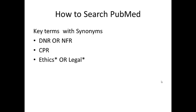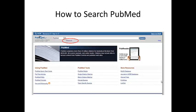Now we've got some terms and synonyms, we are ready to search. Make your way over to PubMed through the database's A-Z link and then click on the advanced search button. Advanced searching gives you a lot more flexibility when adding in search terms.